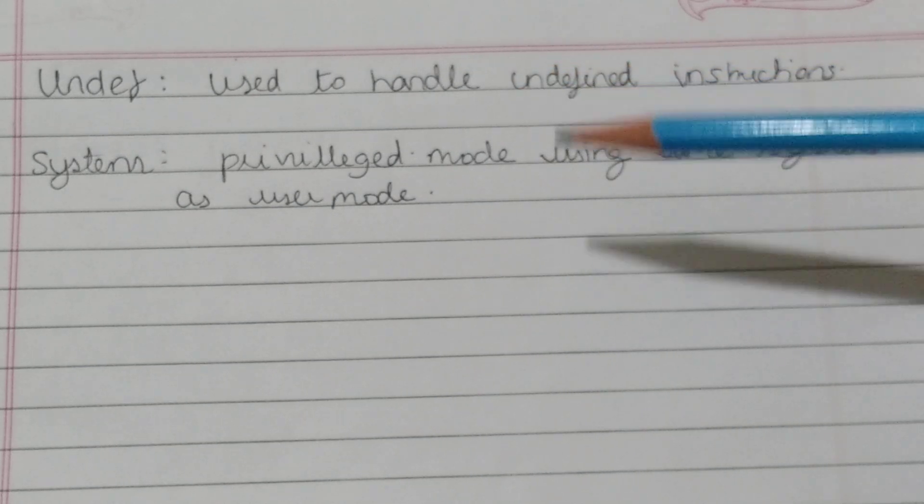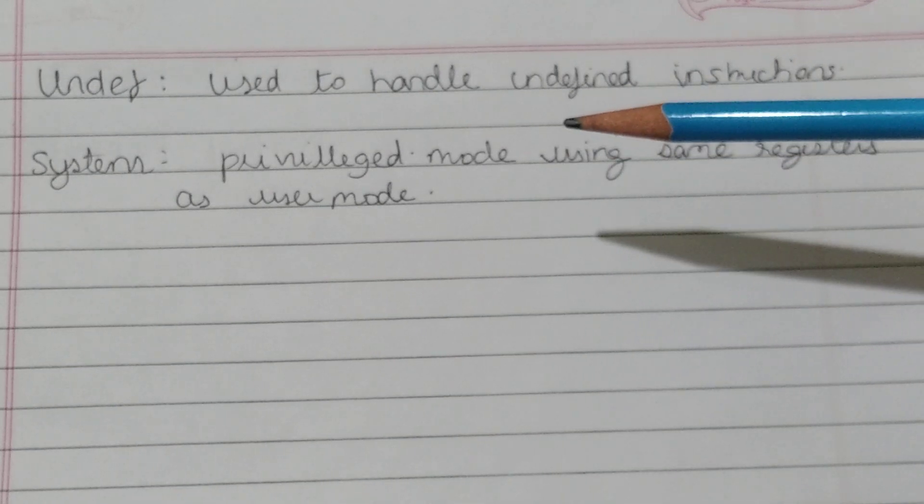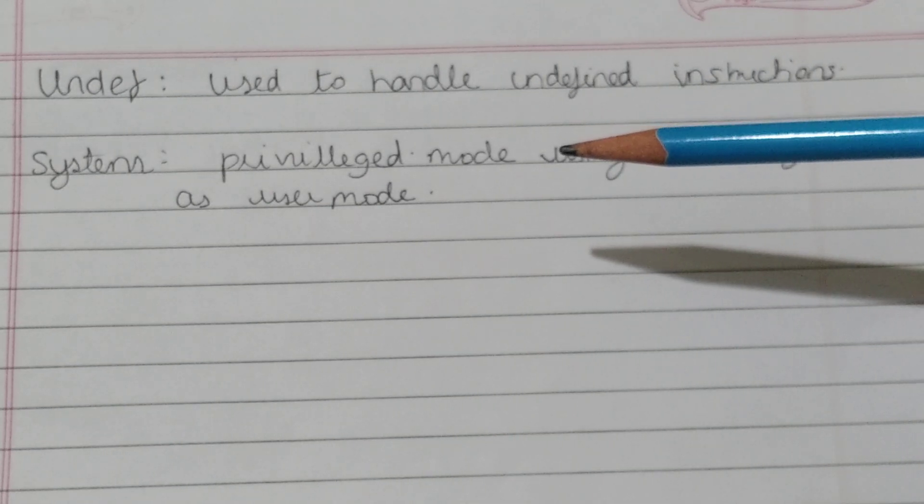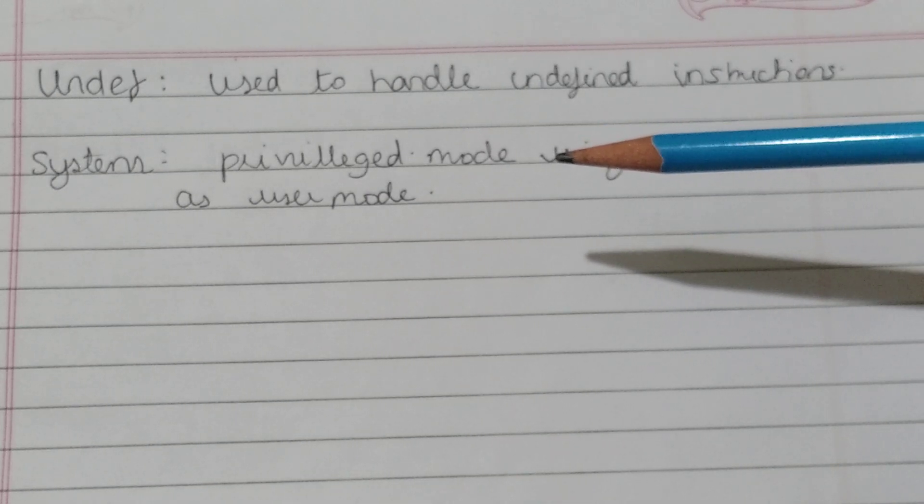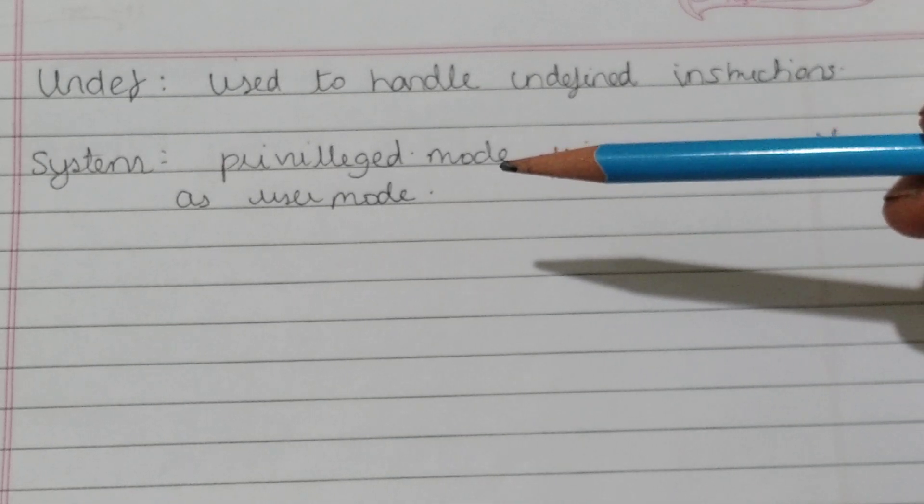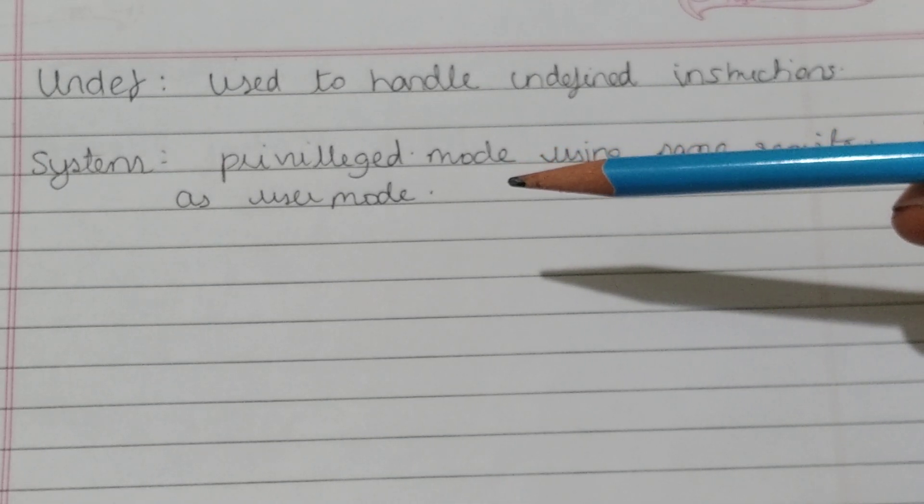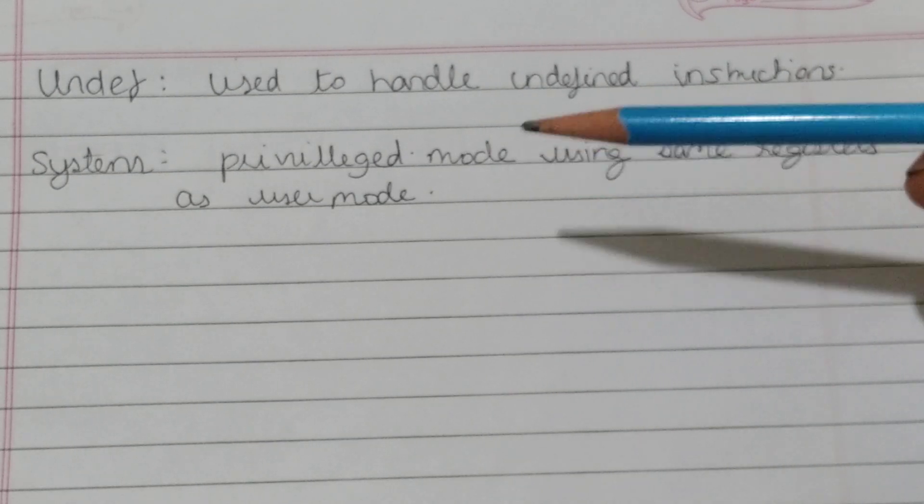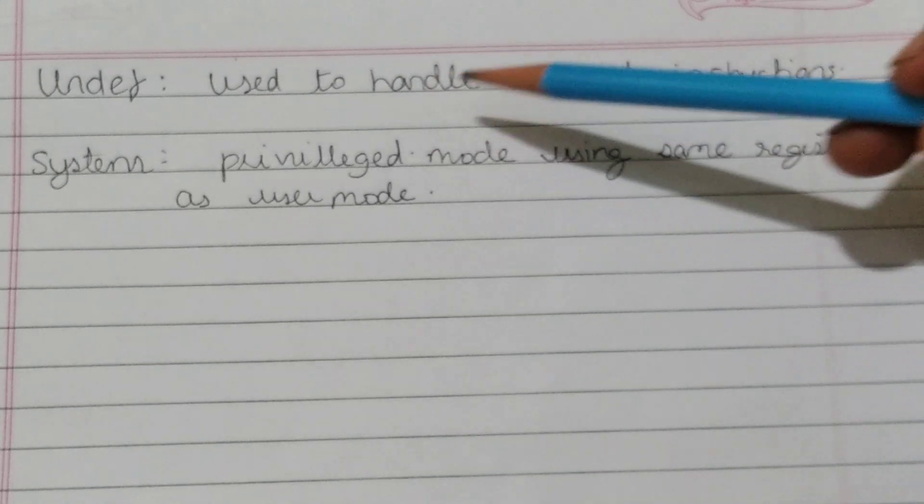If the coprocessor which can handle this instruction is busy at that time, then ARM7 can wait for the coprocessor. And if no such coprocessor is available in the system, then ARM7 can consider it as undefined instruction and it enters into an undefined mode.